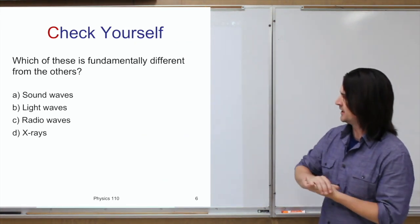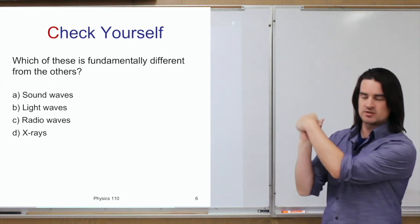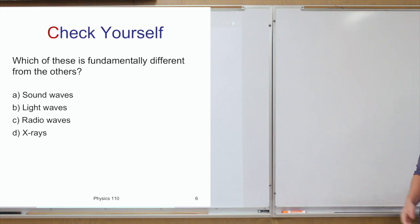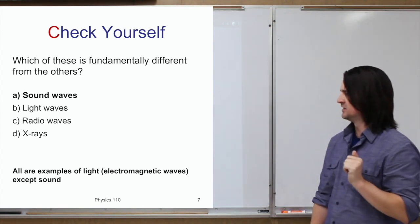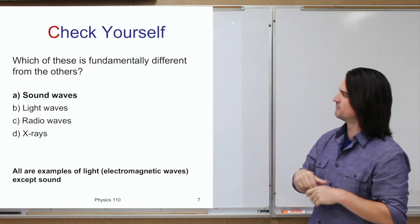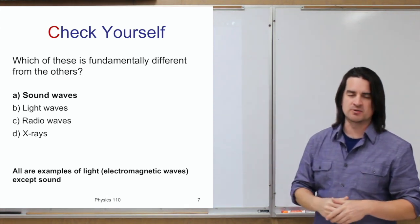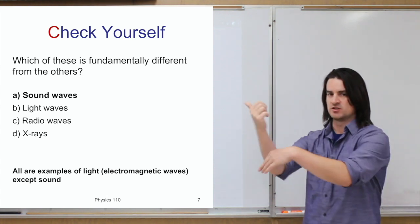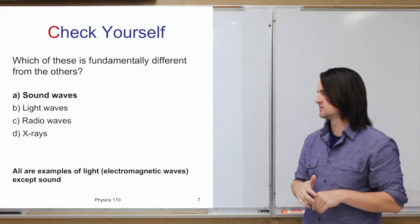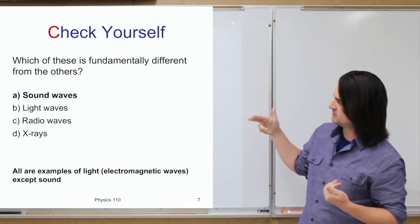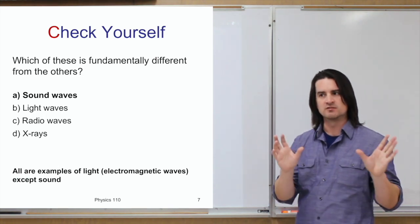Which of these examples is fundamentally different from the others: light waves, radio waves, x-rays, or sound waves? The answer is sound waves. Light waves, radio waves, and x-rays are all electromagnetic waves. Sound waves are completely different — they are longitudinal waves, not transverse, and they are mechanical waves where physical things with mass are actually moving. All those others are examples of parts of the electromagnetic spectrum.